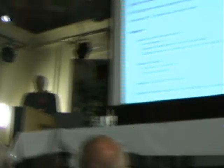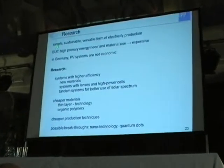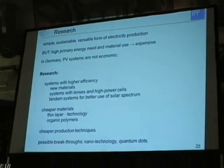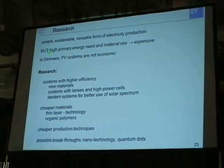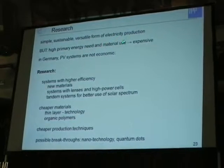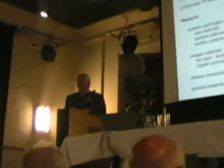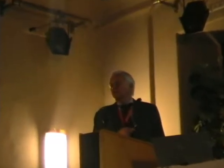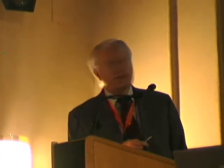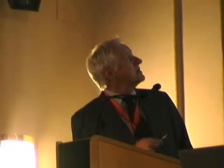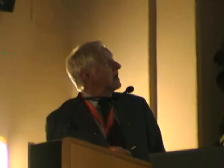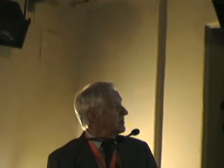Photovoltaic is a simple, sustainable, and versatile form of electricity production with a tremendous appeal to physicists. But there is a high primary energy needed to produce it and tremendous material use, making it a very expensive energy form. In Germany, which is not famous for a lot of sun, photovoltaic systems are not economic. There is a lot of research potential: higher efficiency systems with new materials, systems with lenses, high-power cells, tandem systems for better use of the solar spectrum, cheaper materials, thin-layer technology, organic polymers, cheaper production techniques as the Chinese have demonstrated, and possible breakthroughs in nanotechnology and quantum devices.